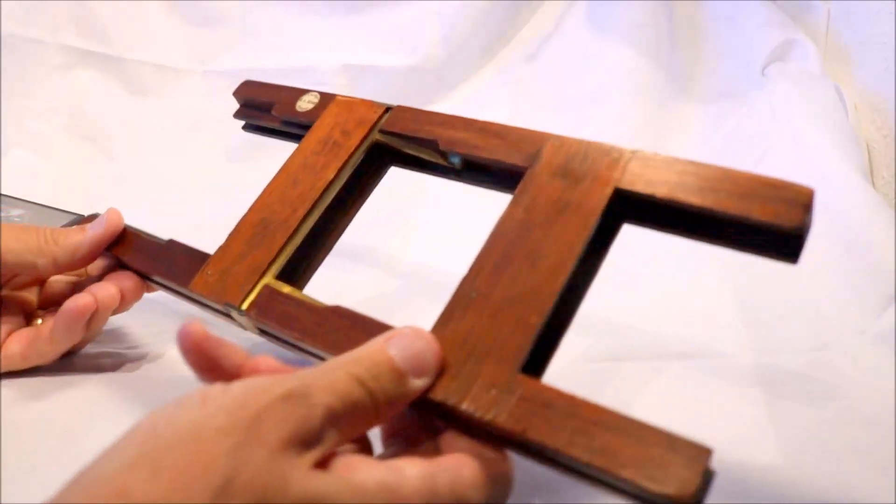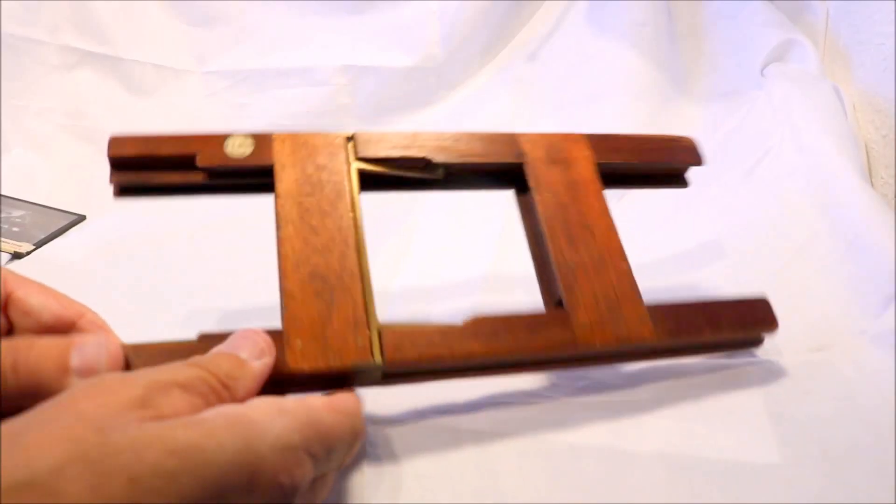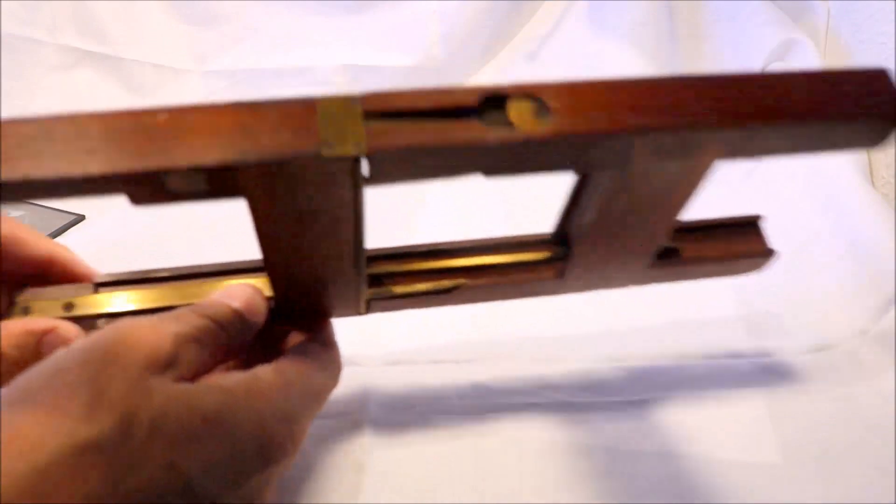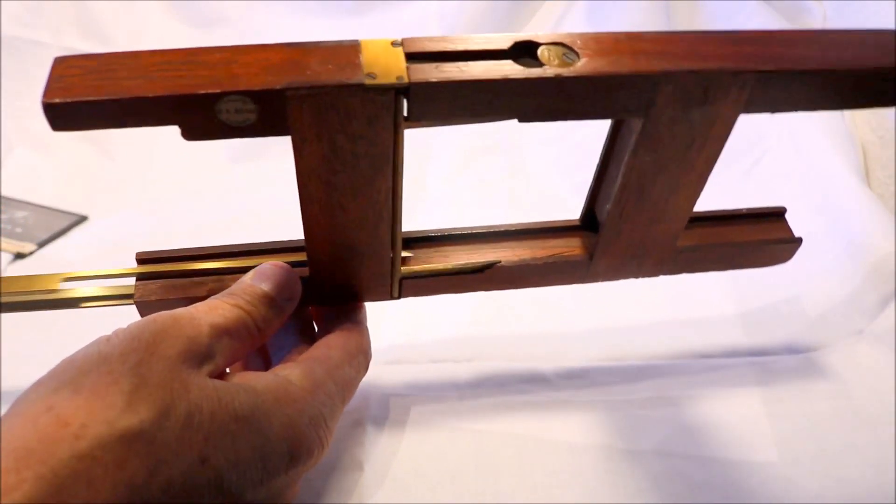So this is the top end, this is the Rolls Royce of slide carriers. And as you can see it's mahogany and brass, it's a wonderful piece of Victorian engineering.